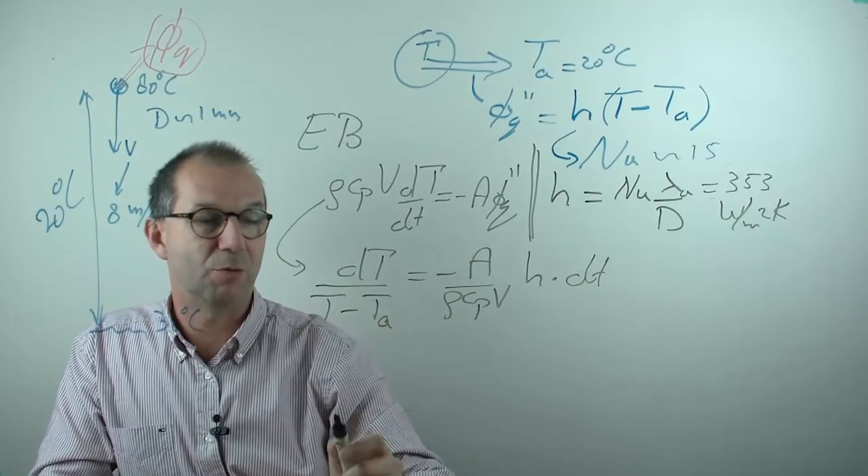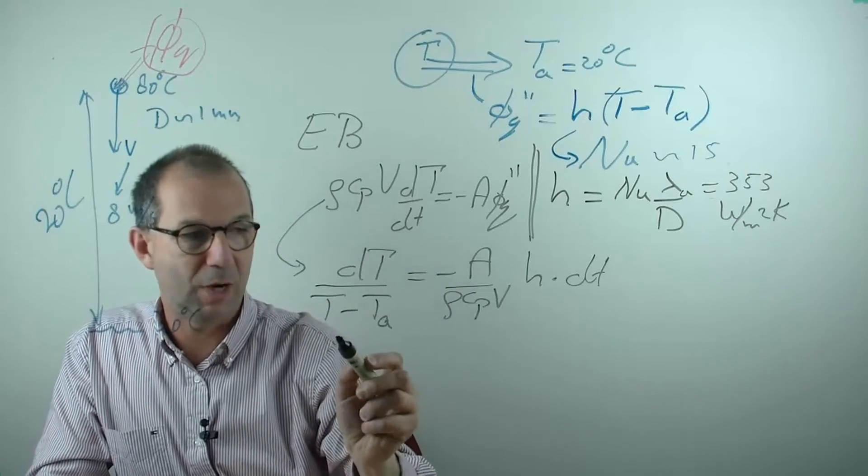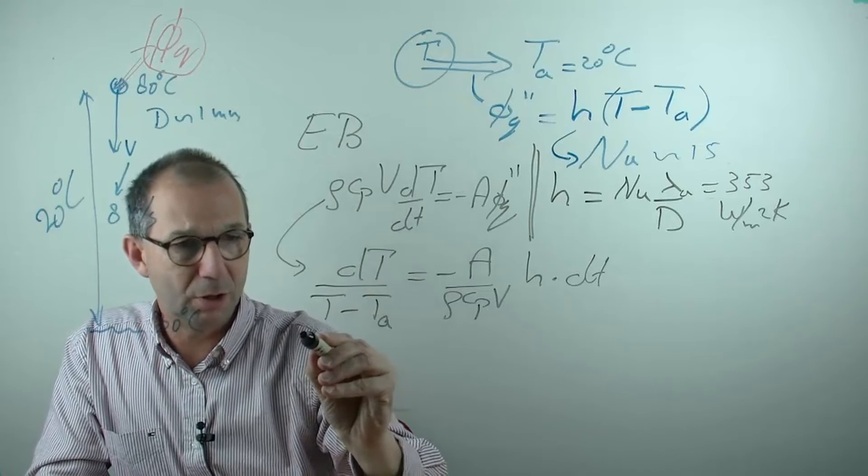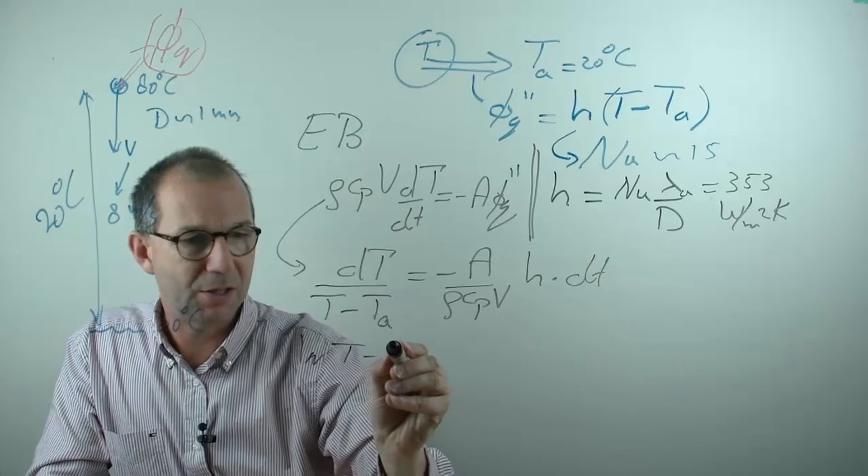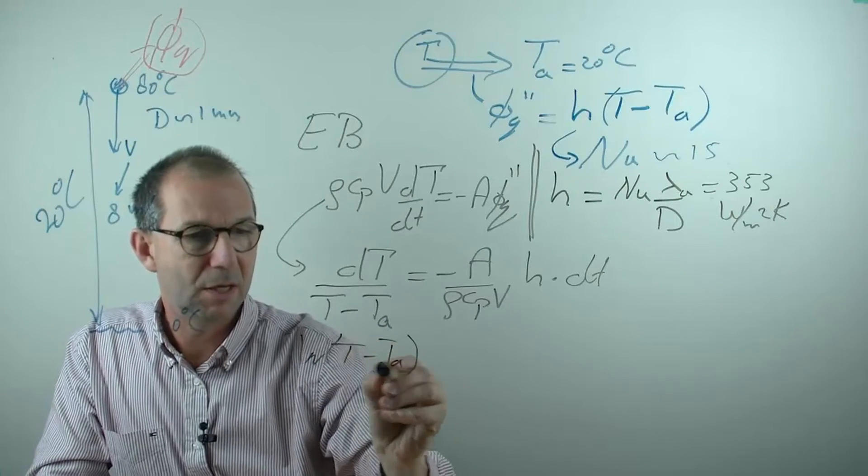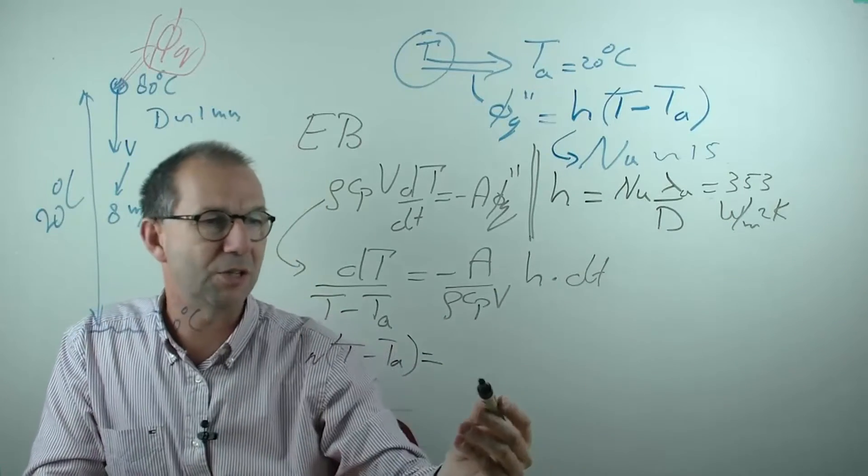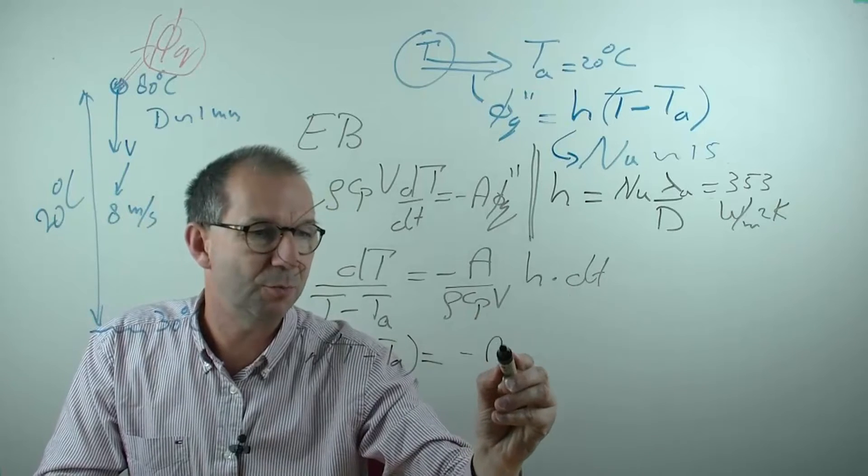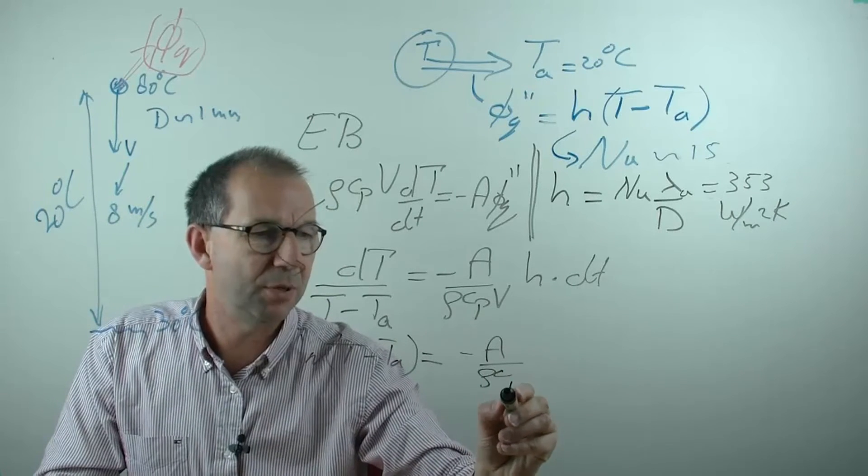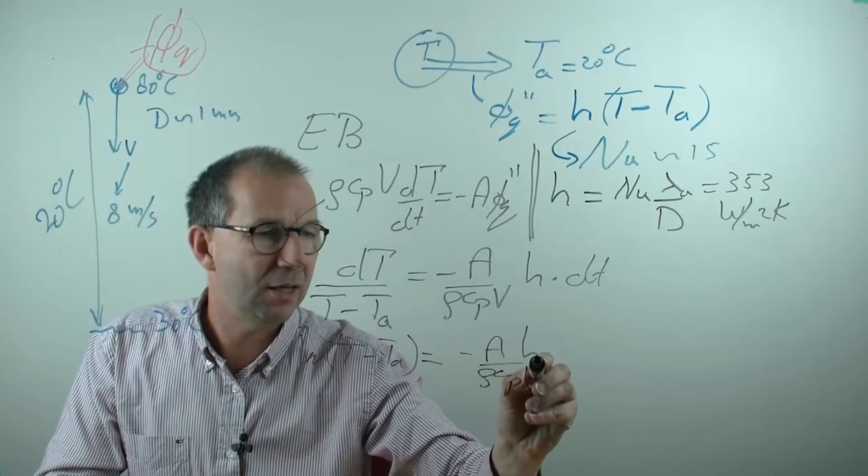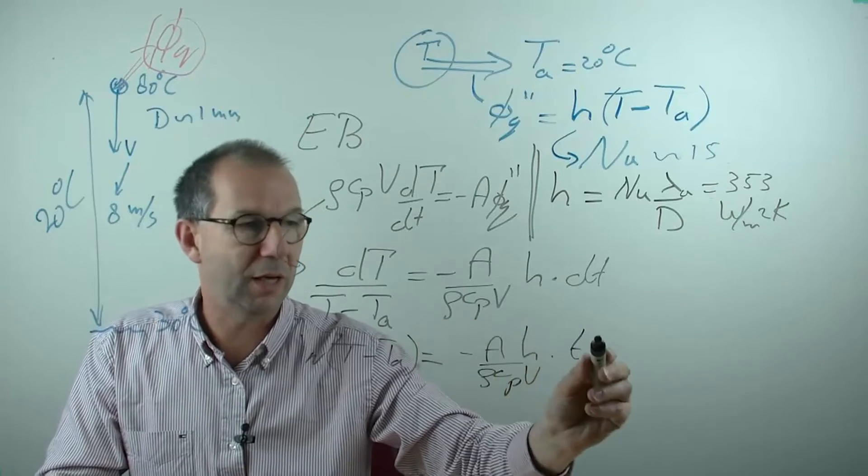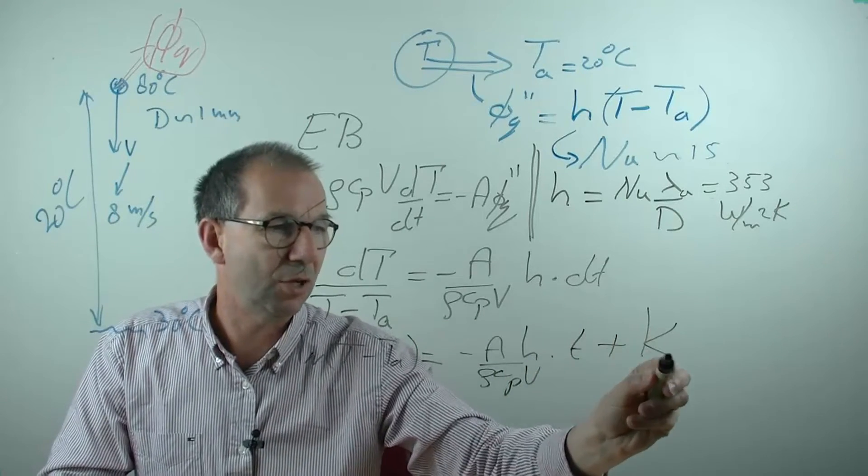I can solve this by integrating. And if I integrate, I get here the logarithm of T minus T equals integrating this part. And this part is easy because there is only integration for T and the rest is constant. So this gives me A rho Cp V H times T and I shouldn't forget the integration constant because I'm integrating.